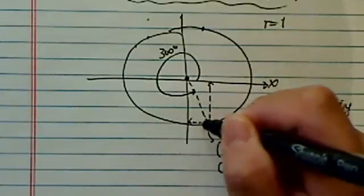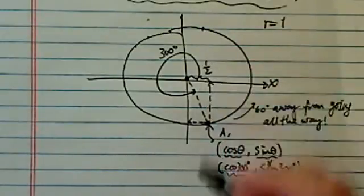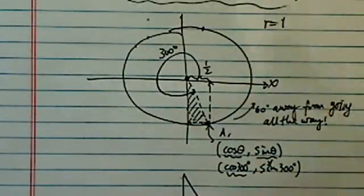This one is 60 degrees, so the x-distance is half. Let's draw this triangle out here, outside, so we can see it better.